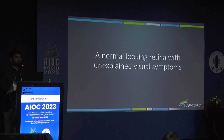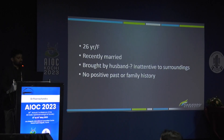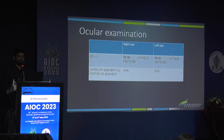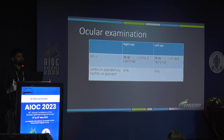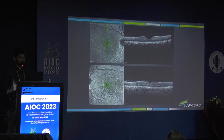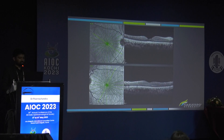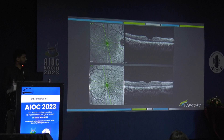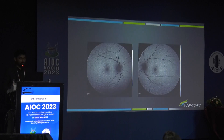Here is one more example where the retina looks normal but there are unexplained visual symptoms. A 26-year-old female, recently married, brought by her husband because she was inattentive to surroundings. No positive family history. She was giving variable responses, saying her in-laws were simply suspecting a problem. She was not even willing to get her vision tested. Somehow we convinced her and did OCT scans — all cross-sections were normal with no defect in any layer, and autofluorescence was also normal.